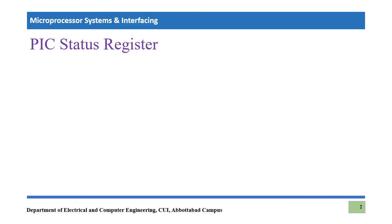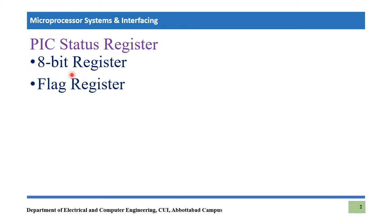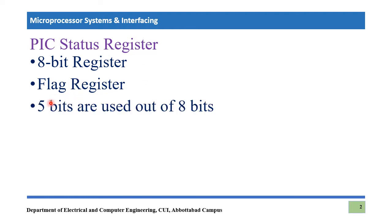The PIC status register is also known as the flag register. It is basically an 8-bit register because we are working on PIC18F452, which is an 8-bit microcontroller. So every internal register present in this microcontroller is 8-bit. This status register is also an 8-bit register, also known as the flag register.